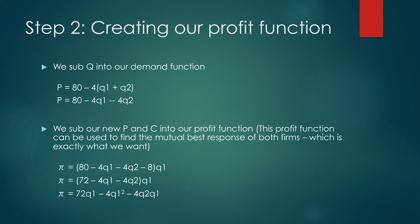Step two is to create our profit function. First, we substitute Q into our demand function. P equals 80 minus 4q1 minus 4q2 is what we get after we substitute Q into our demand function. Next, we substitute our new P and C into our profit function.